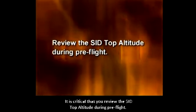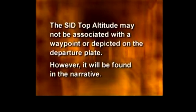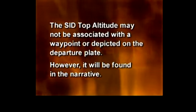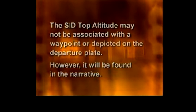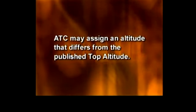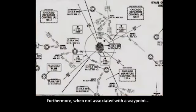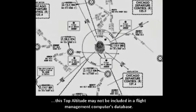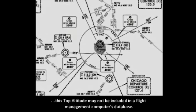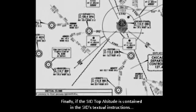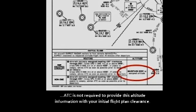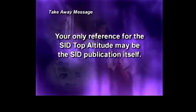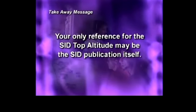It is critical that you review the SID top altitude during pre-flight. The top altitude on a SID may or may not be associated with a waypoint or otherwise depicted on the departure plate, but at a minimum it will be found in the narrative of the procedure. For operational reasons, ATC may assign an altitude that is different from the published top altitude. Furthermore, when not associated with a waypoint, this top altitude may not be included in a flight management computer's database. If the SID top altitude is contained in the SID's textual instructions, ATC is not required to provide this altitude information with your initial flight plan clearance. Your only reference for this critical SID top altitude information may be the SID publication itself.